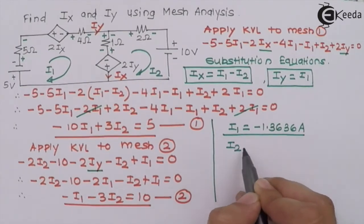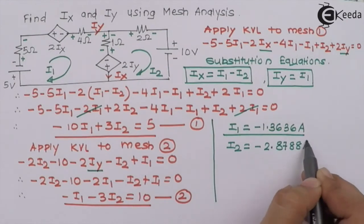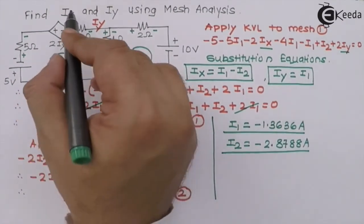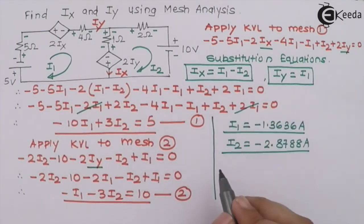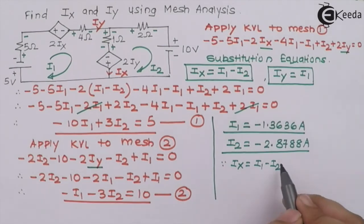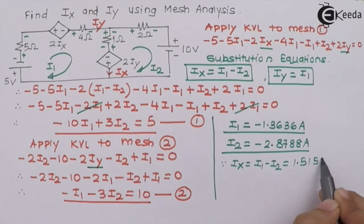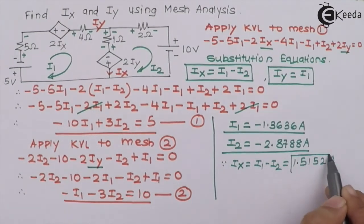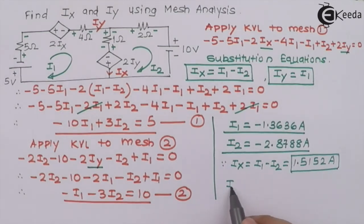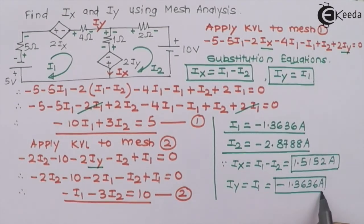With i2 equal to minus 2.8788 ampere, we can now find ix and iy. ix equals i1 minus i2, and substituting i1 and i2 gives ix equal to 1.5152 ampere. iy equals i1 minus i1 minus i1 which gives minus 1.3636 ampere. Here is the complete solution for this problem.